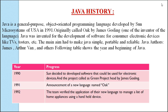Java was invented for the development of software for consumer electronic devices like TVs, toasters, etc. The main aim was to make Java simple, portable and reliable. The developers of Java also developed C++, and they modeled their new language Java on C and C++, but removed a number of features of C and C++ that were considered a source of problems, which made Java a really simple, reliable, portable and powerful language.